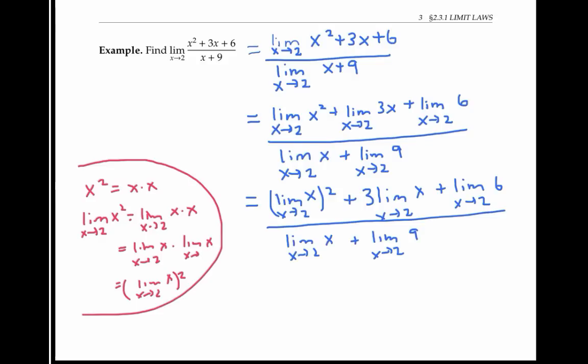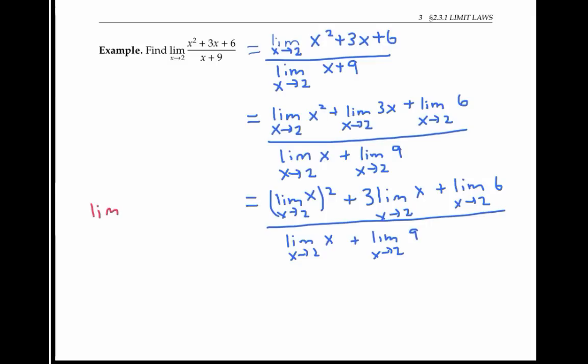Now that we've got things broken down into bite-sized pieces, we can start evaluating some limits. Notice that the limit as x goes to 2 of x is just 2, because as x heads towards 2, x heads towards 2.